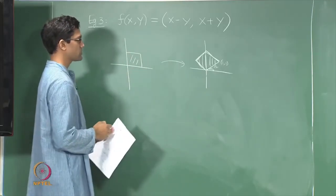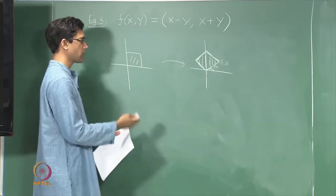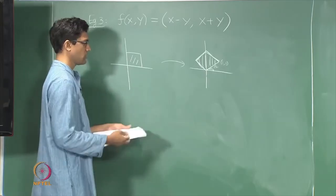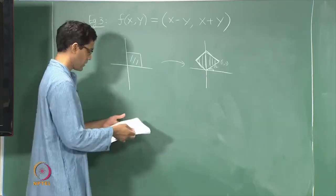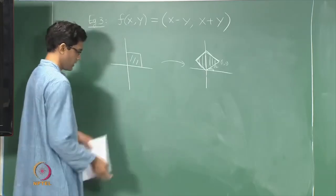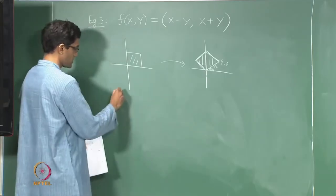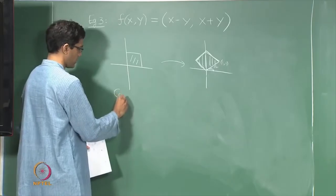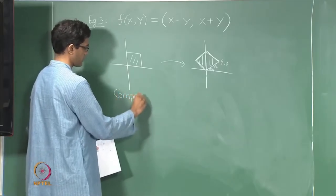It seems like there are two operations happening here at once. So this is the natural notion of composition of maps.